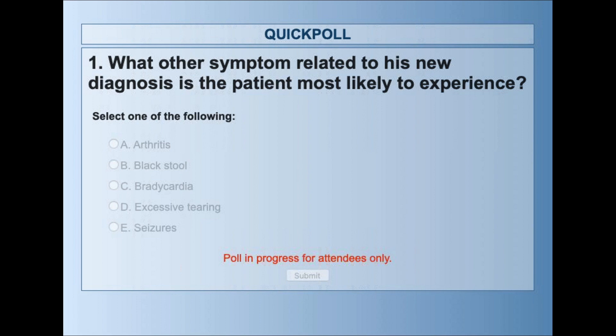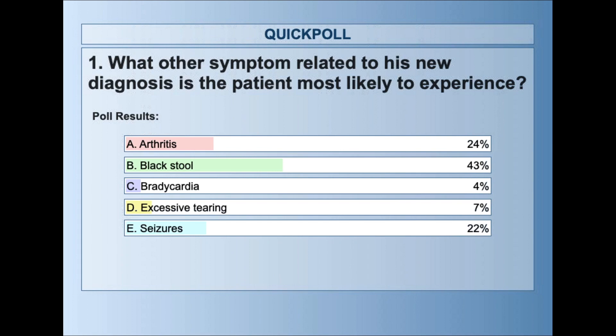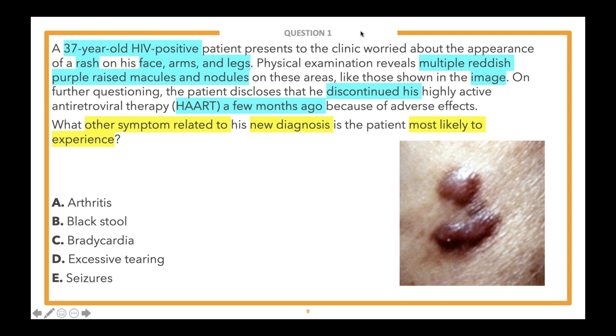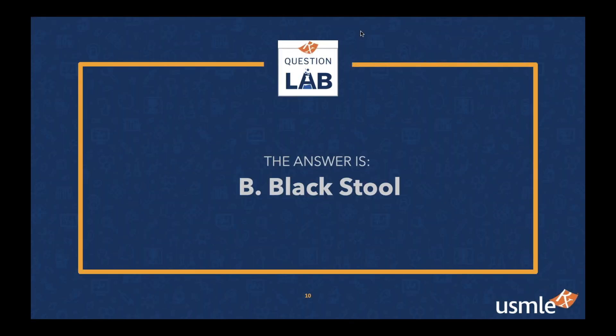Results: first place was black stool, with 43 of you selecting answer choice B. Second and third place were arthritis and seizures, closely tied. The correct answer is B — black stool — and 43 of you got it right. Well done.